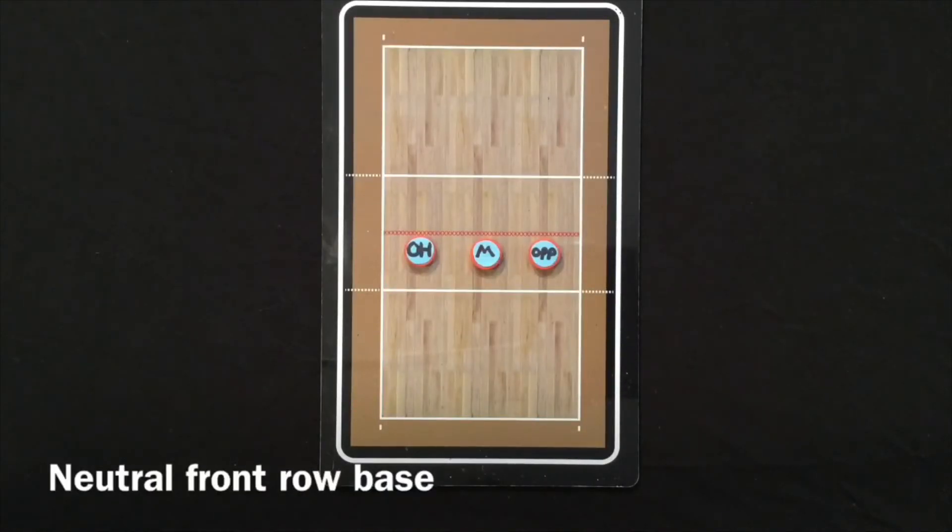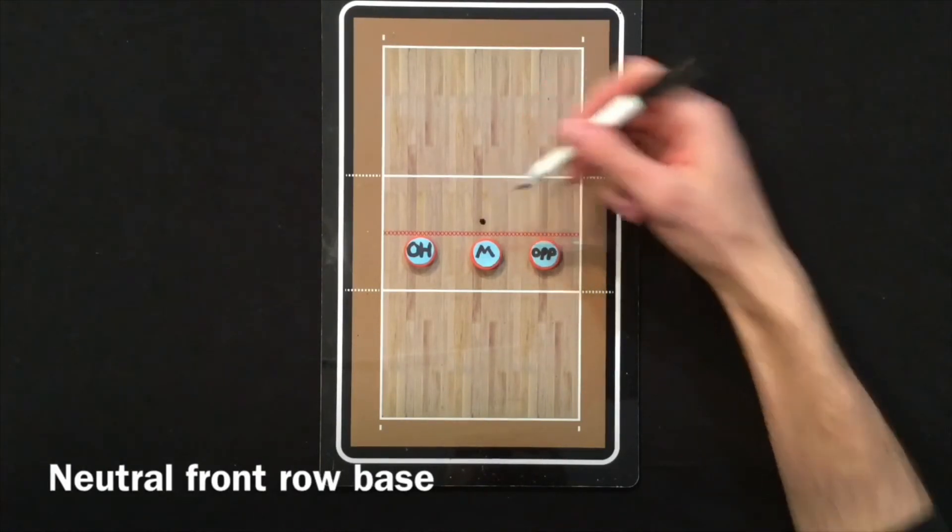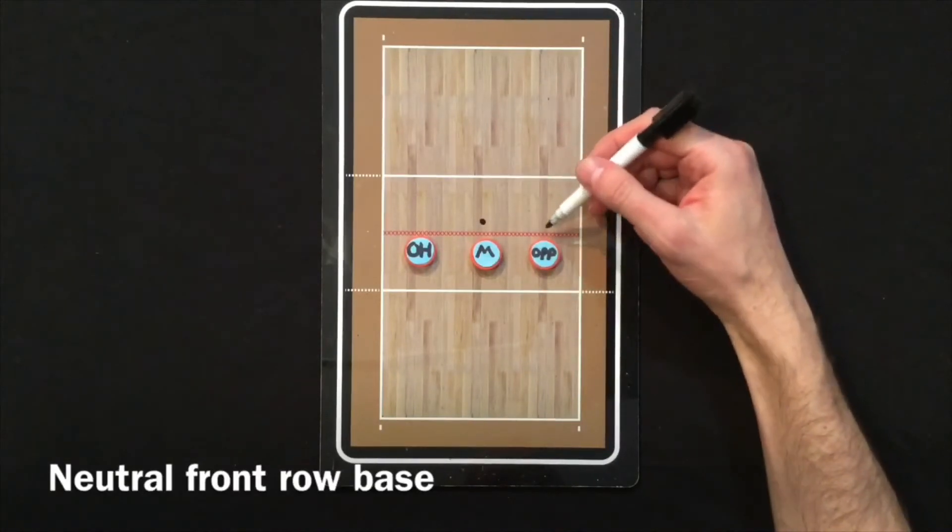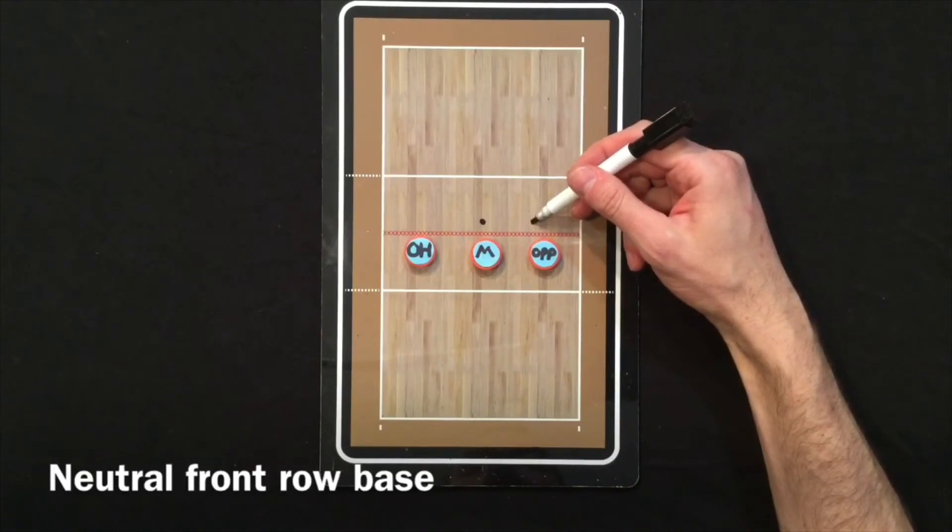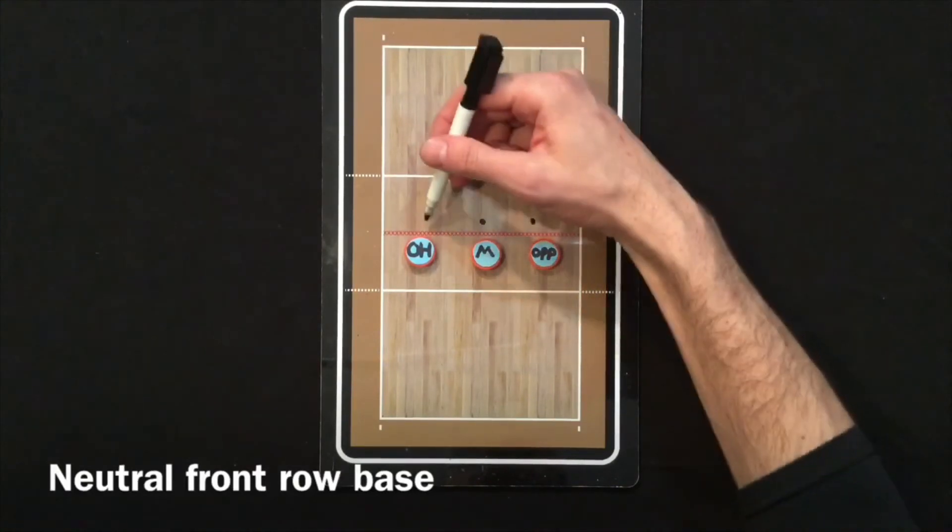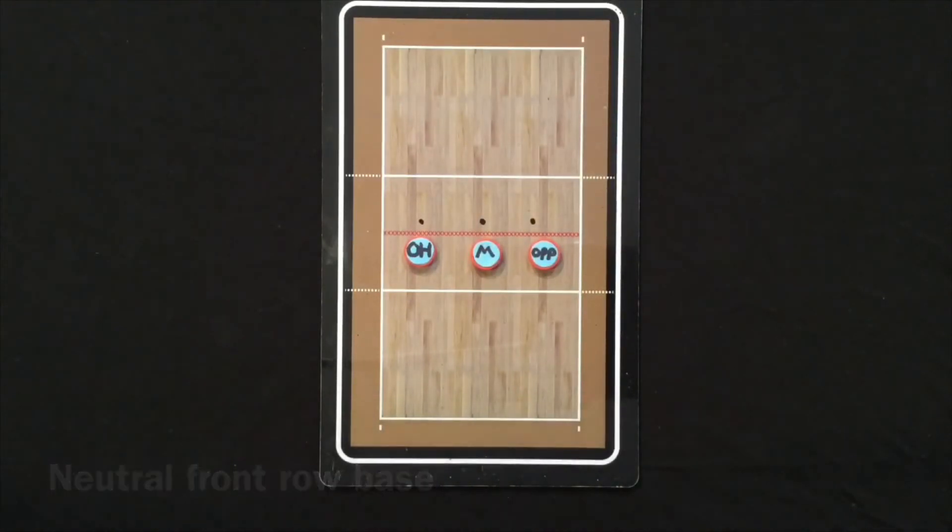This is front row base. Generally what you want to do is spread out equidistant across the front row. So the middle obviously would start in the very middle of the court, and then the wing players can vary a little bit but just trying to get in between that middle player and the sideline. So this is a very basic base.